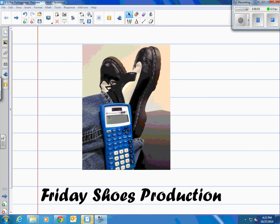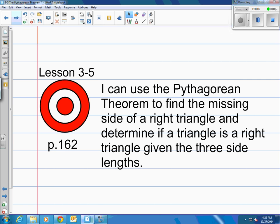This is a Friday Shoes production. This is lesson 3-5 in our books on page 162. The target is I can use the Pythagorean Theorem to find the missing side of a right triangle and determine if a triangle is a right triangle given the three sides of the triangle, three lengths.